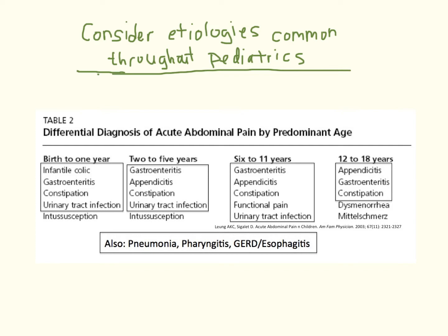Because the list is long, it is important to know about conditions that vary greatly in incidence with age. Some important etiologies are common throughout pediatrics. Those related to the gastrointestinal tract include infectious gastroenteritis, functional constipation, appendicitis, and reflux esophagitis. I will now discuss the first two, focusing on clinically relevant information for acute care.